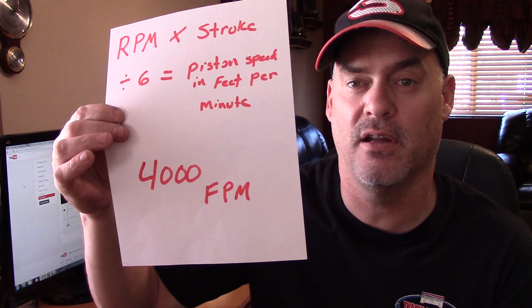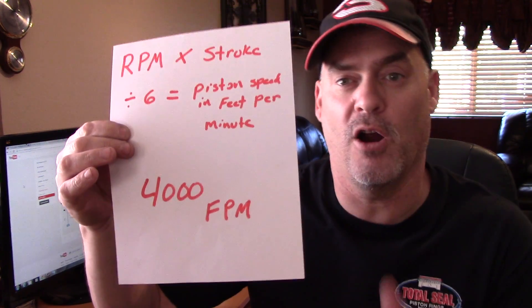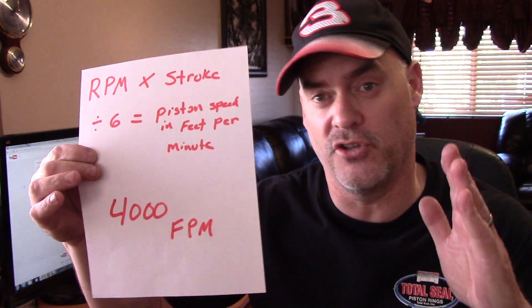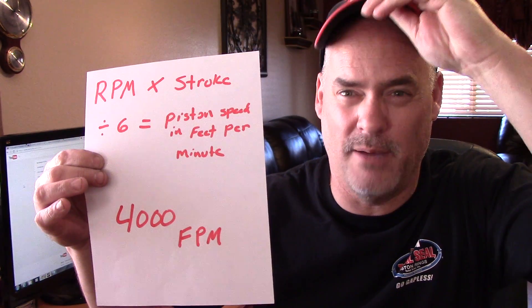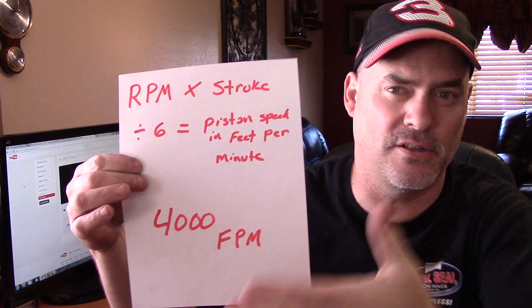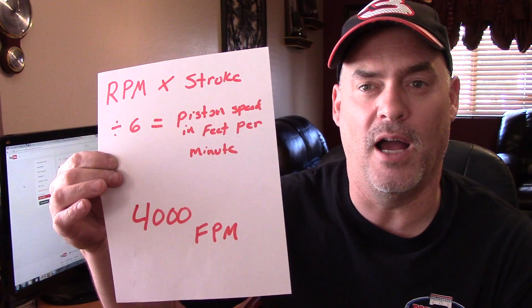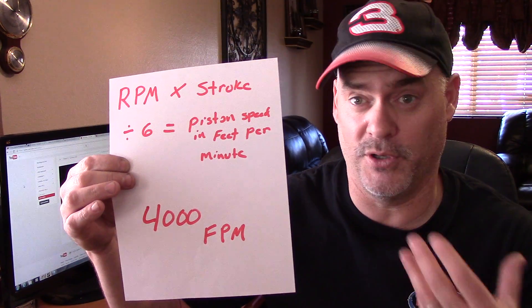For a street engine, we really don't want to see a piston speed of more than 4,000 feet per minute. That's a safe speed for a mildly modified engine. You can go higher than 4,000 feet per minute, but you're going to have to do a lot of reliability modifications — you'll have to really beef up the internal components of that engine so they can handle it.